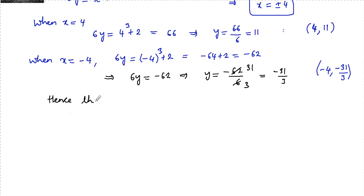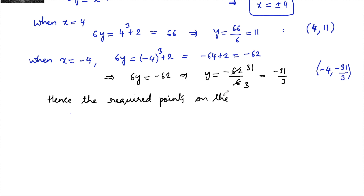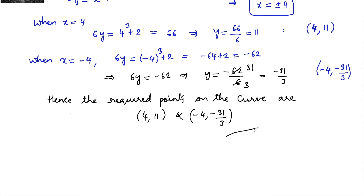Hence, the required points on the curve as per the given conditions are (4, 11) and (−4, −31/3). Thank you.